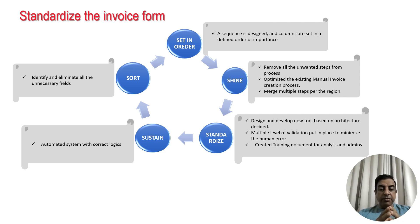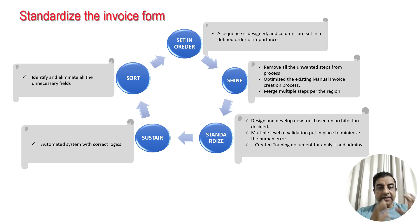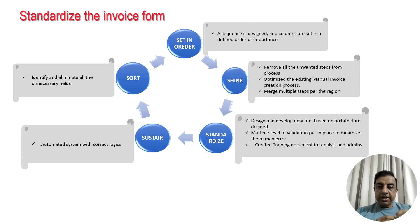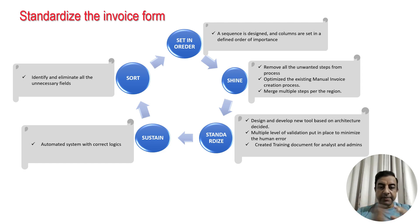To standardize the form, the team used 5S as a lean tool. Under Sort, they identified and eliminated all unnecessary fields. Under Set in Order, a sequence was designed and columns were set in a defined order of importance. Under Shine, the team removed all unwanted steps and optimized the existing manual invoice creation process, merging multiple steps across regions. Under Standardize, they designed and developed a new tool based on the agreed architecture, with multiple levels of validation to minimize human error, and created training documentation for analysts and admins. Finally, they Sustained the process by automating the system with correct logic.